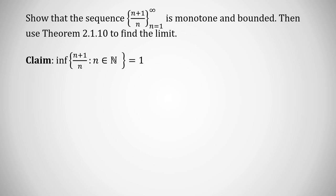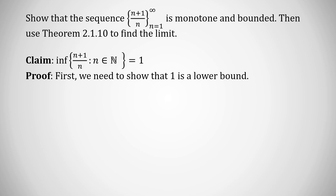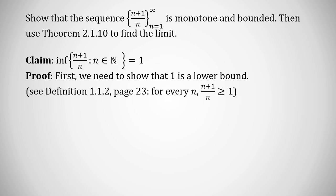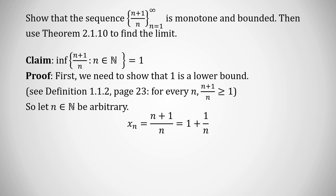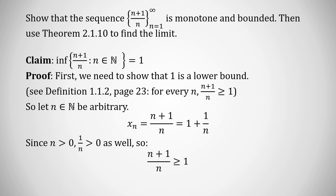Let's prove that the infimum of the set {(n+1)/n} equals 1. First, we show 1 is a lower bound. Let n be an arbitrary natural number. x_n = (n+1)/n = 1 + 1/n. Since n is positive, 1/n is positive, so x_n = 1 + 1/n > 1 ≥ 1. Therefore every term is bigger than or equal to 1, so 1 is a lower bound.